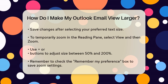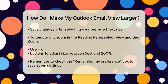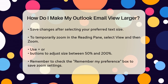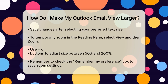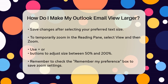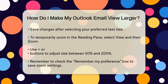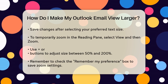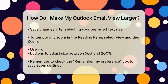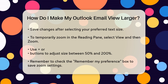For temporarily enlarging an email in the Reading pane, you can use the Zoom feature. Select View from the menu, then click on Zoom. Here, you can use the plus or minus buttons to adjust the size between 50% and 200%. If you want to keep this setting, select the percentage you prefer and then check the Remember My Preference box before clicking OK.